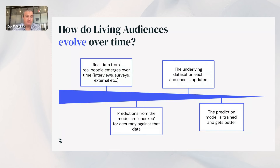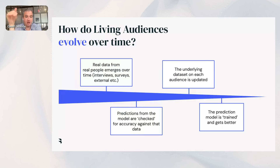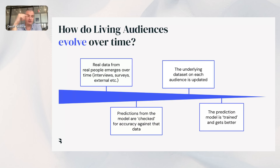Once you have living audiences set up, real data from real people emerges over time — interviews, follow-up surveys, or external datasets. You can use those to check the accuracy of your predictions. If you do research on topic X, you can get the model to predict what findings would be for that same topic, then cross-validate those findings, and use the RAG process to update the underlying dataset and improve predictions — basically training it to improve by saying: you predicted this response, here was the actual response, here's the difference. Over time, you see a narrowing of the gap between prediction and reality.